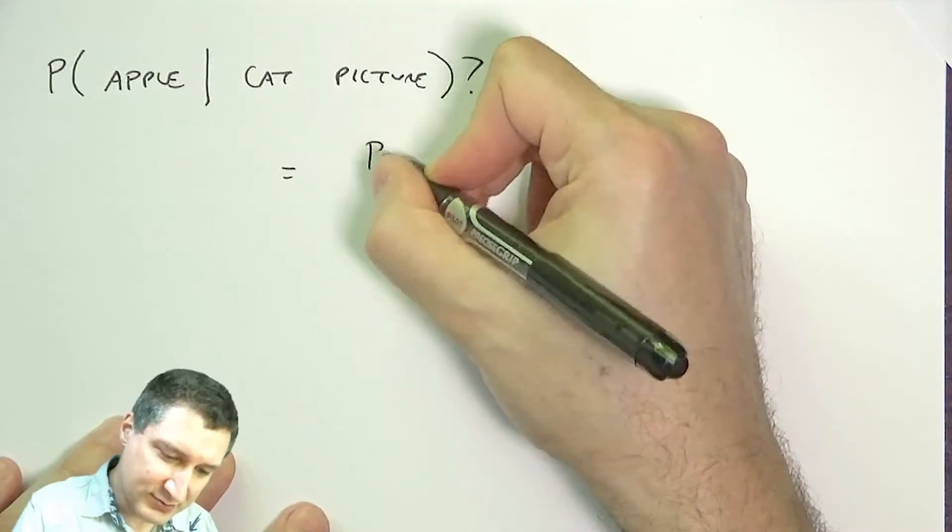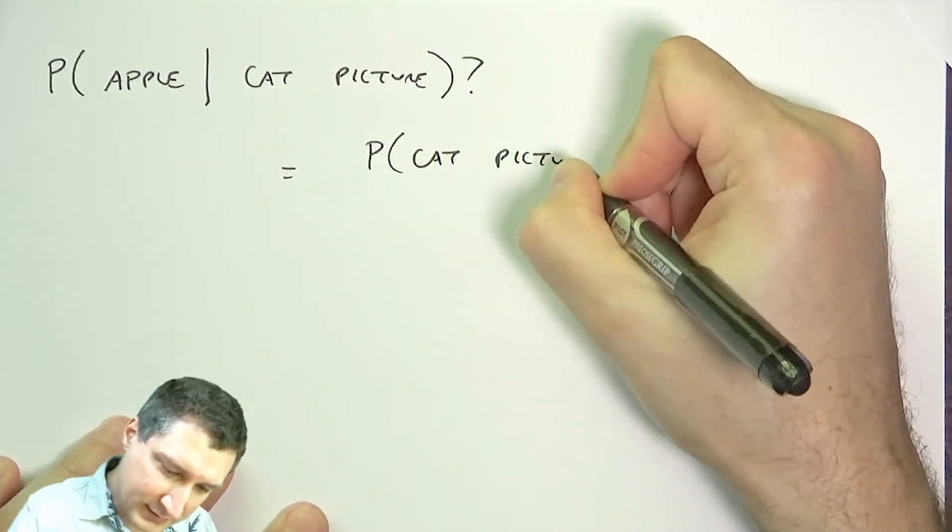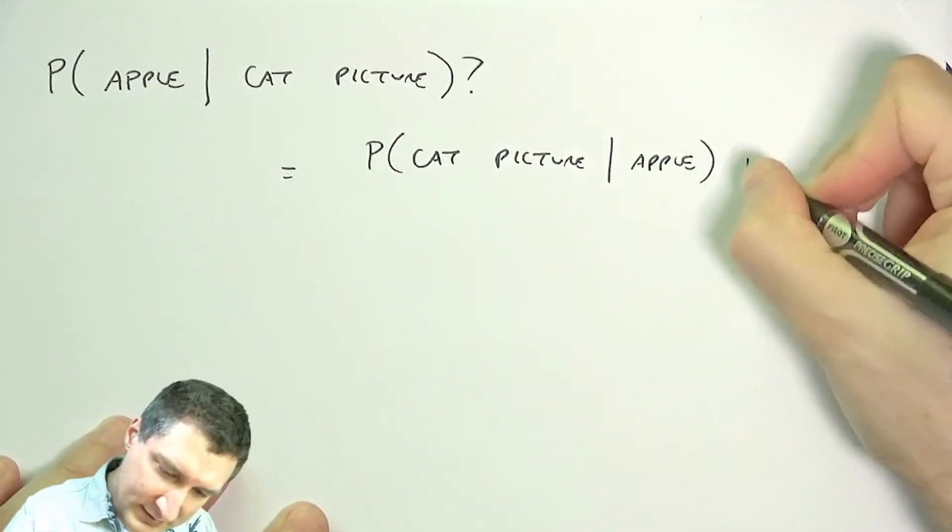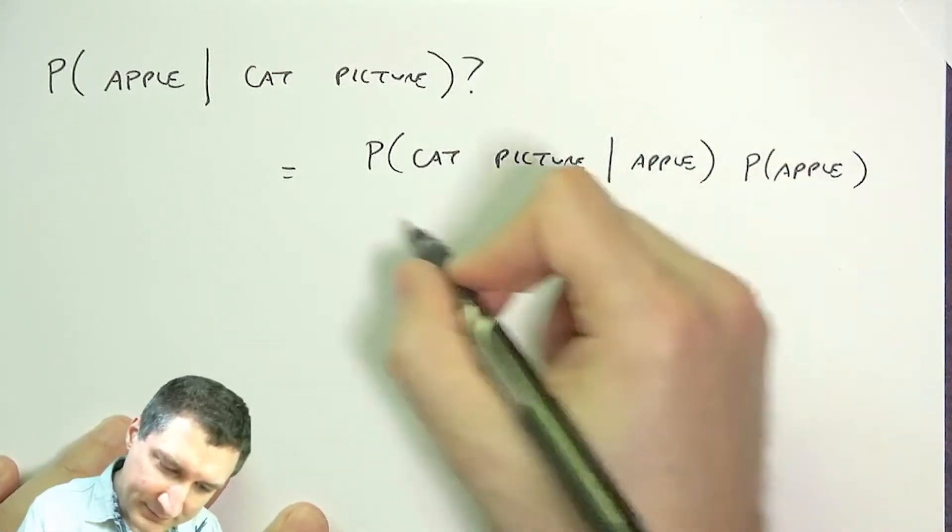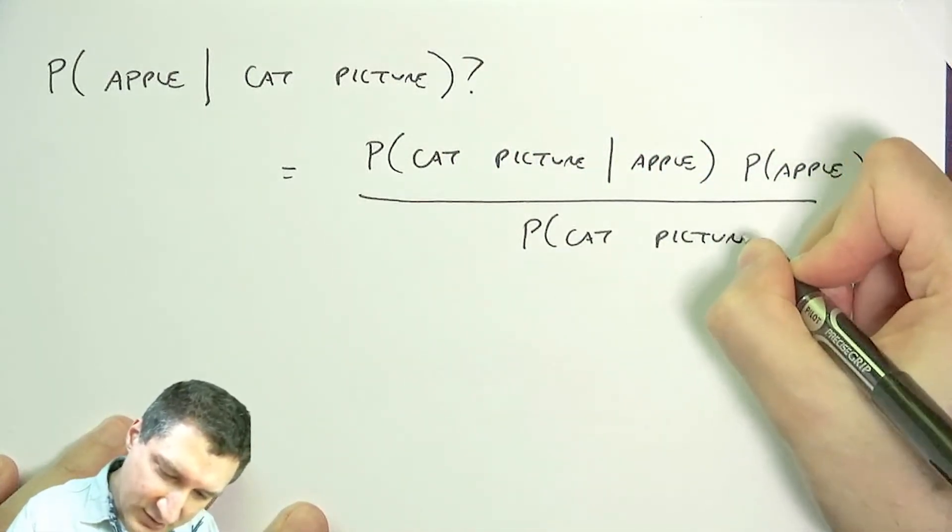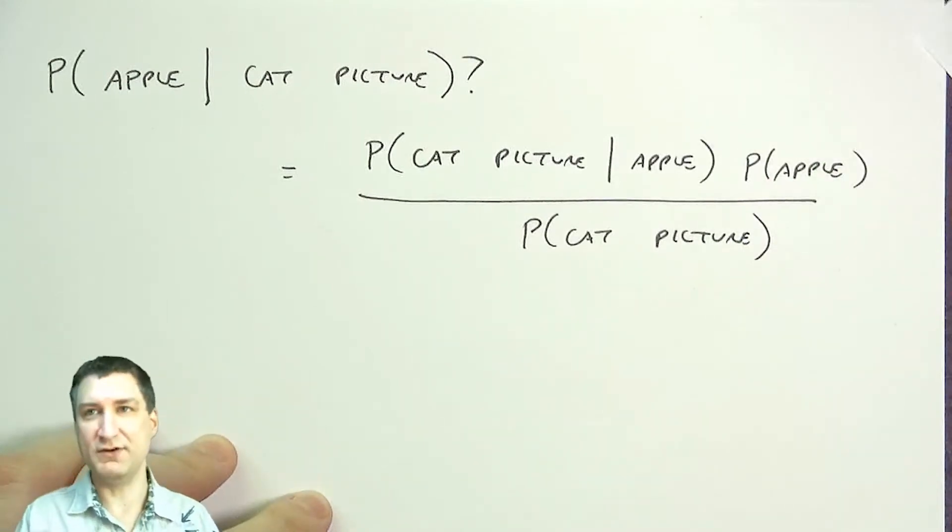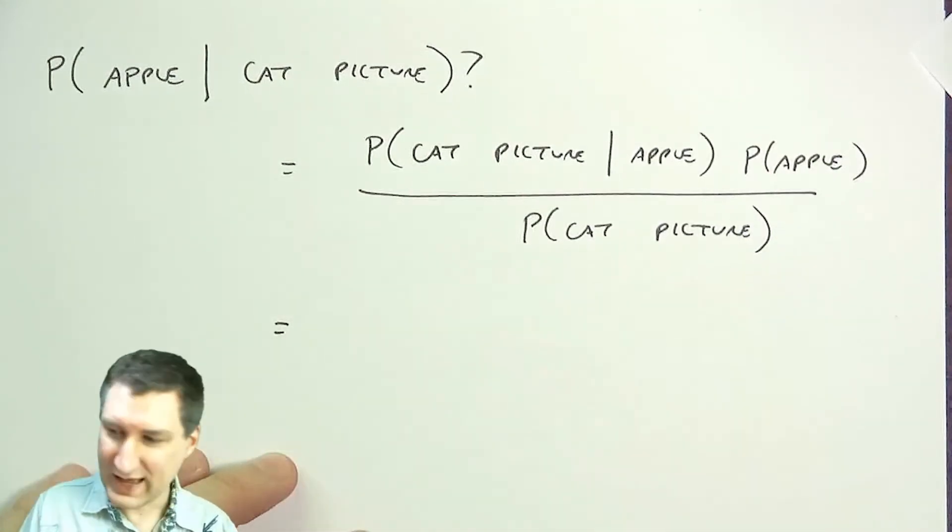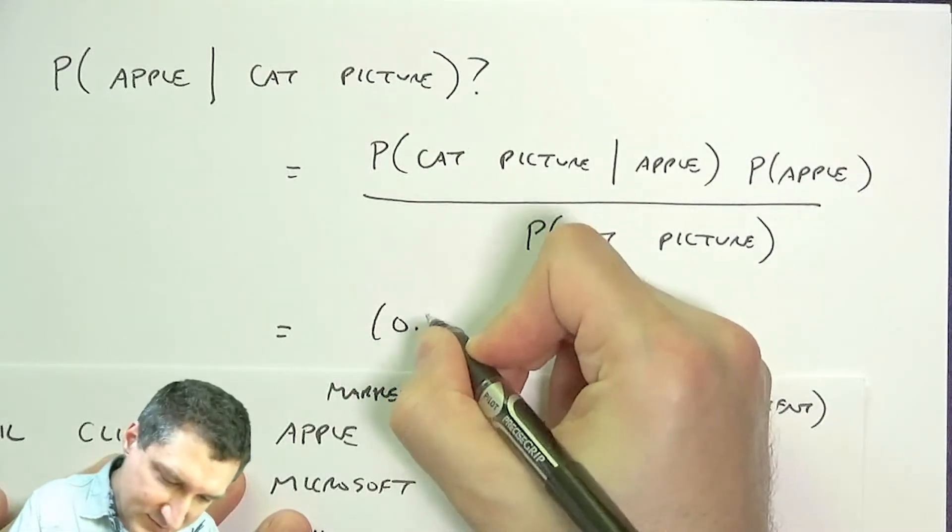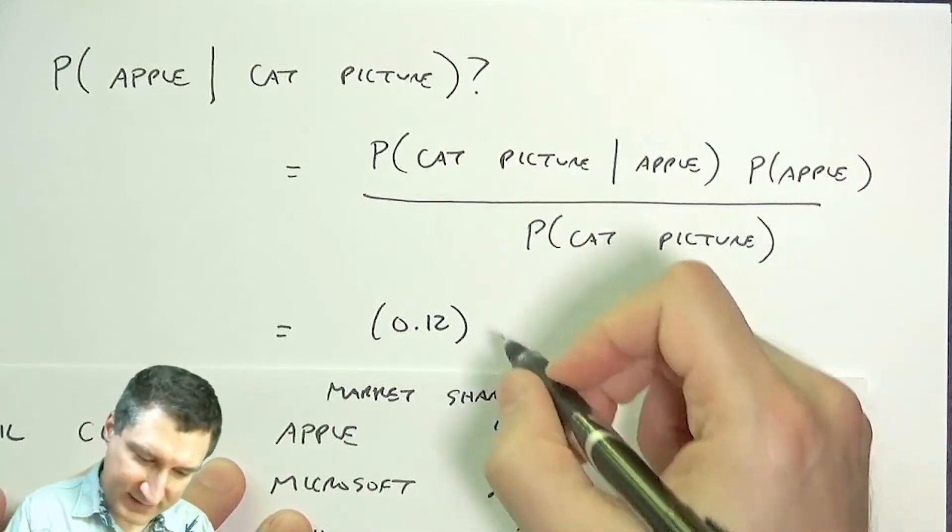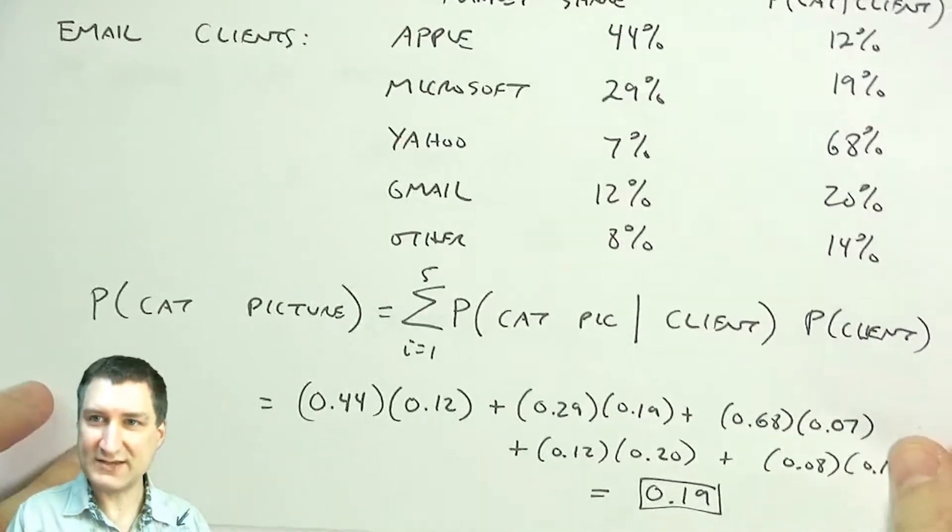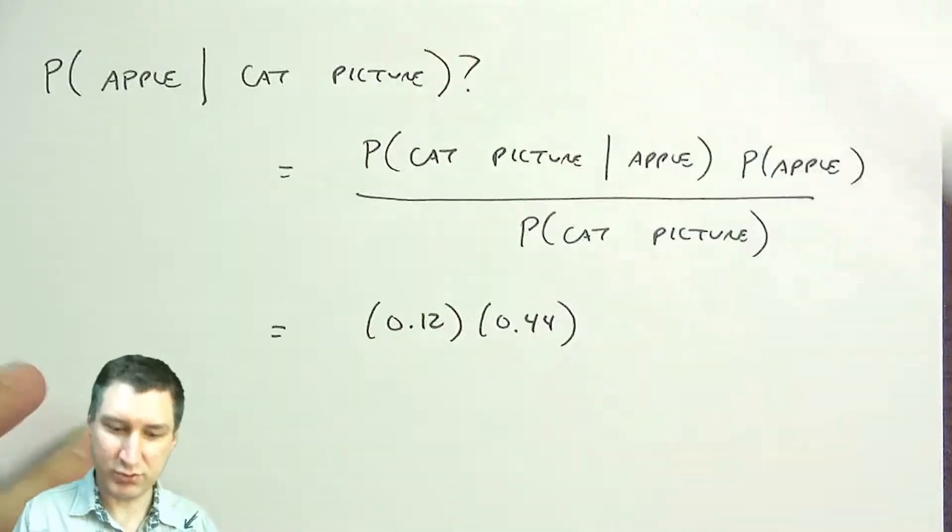Well, by Bayes rule, this is equal to the probability of cat picture given Apple times the probability of Apple over the probability of cat picture. These are all things that I computed or was given. So I was given that the probability of cat picture given Apple was 0.12, and I was given that the probability of Apple was 0.44. I computed last time that the overall probability of cat picture was 0.19.